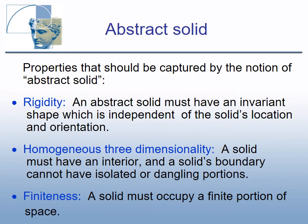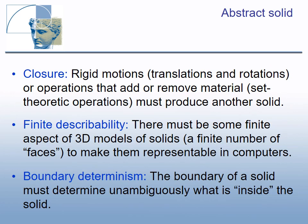We need to understand more clearly what an ideal model is. Rigid motions, or operations that add or remove material using set theoretic operations, must produce another solid. Finite describability: there must be some finite aspect of three-dimensional models of solids to make them representable in computers. Boundary determinism: the boundary of a solid must determine, unambiguously, what is inside the solid.